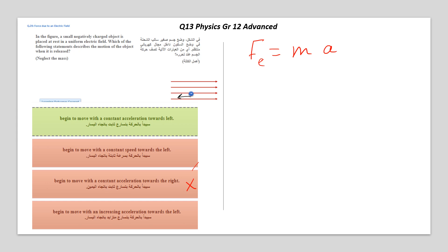Look at option B. B begins to move with a constant speed toward the left. Constant speed means acceleration is zero. If acceleration is zero, there is no force.